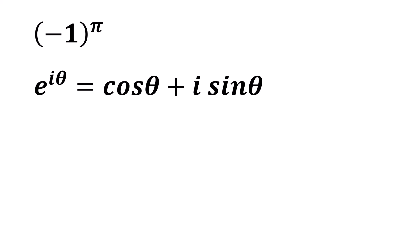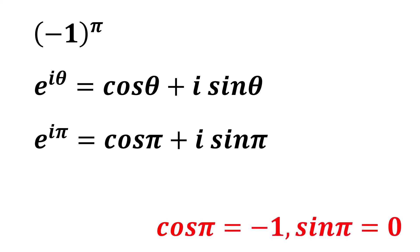Let's substitute theta equals pi. We get e to the power of i pi is equal to cosine of pi plus i times the sine of pi. Since the cosine of pi is equal to negative 1 and the sine of pi is equal to 0.